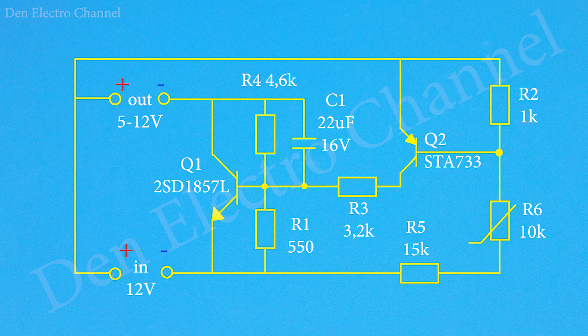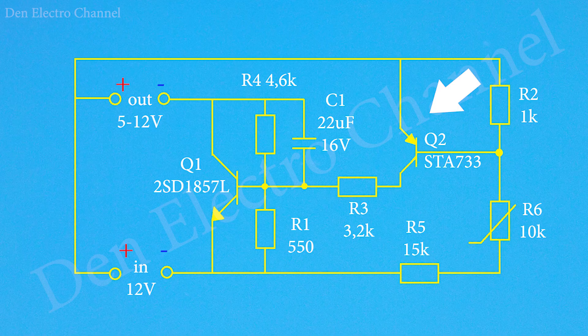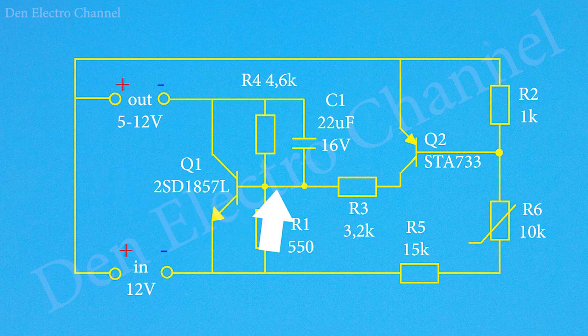When the ambient temperature begins to increase, the resistance of resistor R6 will begin to decrease and then the negative potential at the base of transistor Q2 will begin to increase. And the more the transistor opens, the more transistor Q1 will open through it since the base of transistor Q1 will begin to pull up to the plus through the emitter-collector junction of transistor Q2.